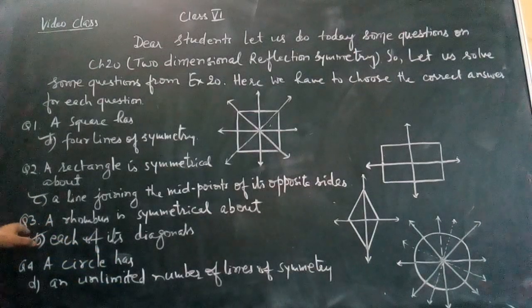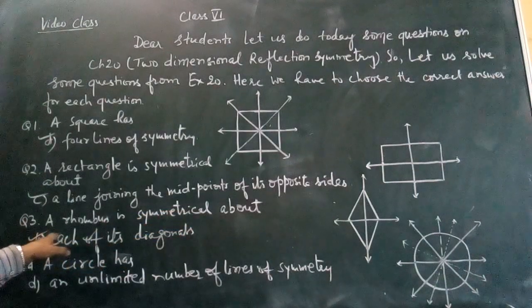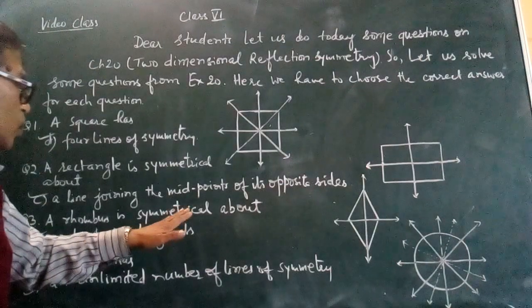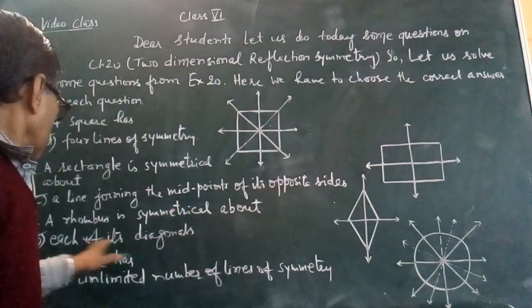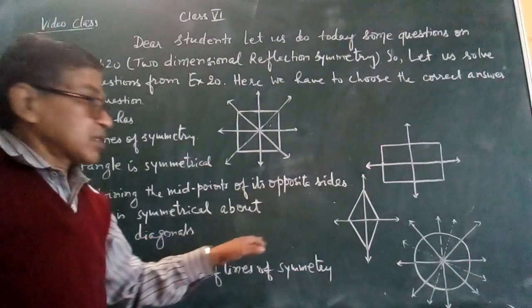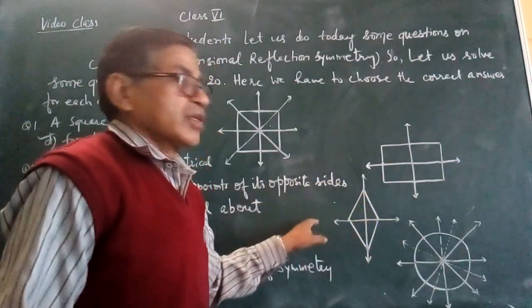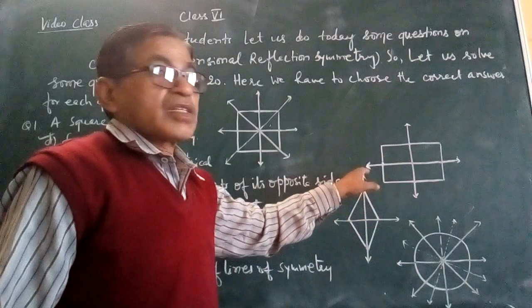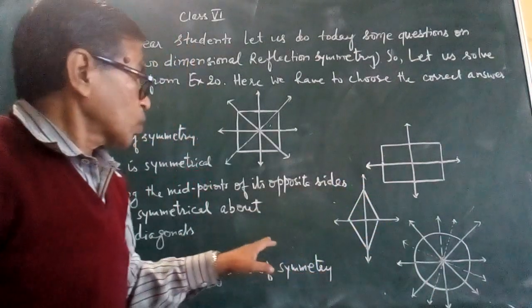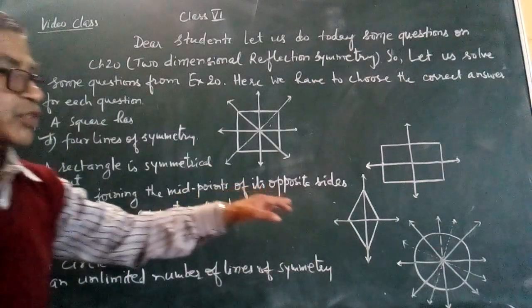Now let us see question number three: a rhombus is symmetrical about - some options are given here, and you have to find out the correct option. Here you can see option number D: each of its diagonals. This is a rhombus, and these two are its diagonals. This rhombus is symmetrical about these two diagonals. You can see that a rhombus is symmetrical about each of its diagonals.